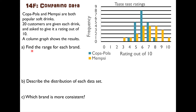To find that, let's find the range of each brand. The range is the maximum minus the minimum. The largest rating someone gave for Copapola is an eight, and the smallest rating is a four. Eight take four — so the range is four.